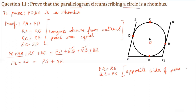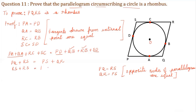So in place of PQ we can substitute RS, and in place of QR we can substitute PS. Writing RS in place of PQ and PS in place of QR, we get RS plus RS is equal to PS plus PS. That is, 2 RS is equal to 2 PS. Cancelling 2 from both sides, that becomes RS is equal to PS.